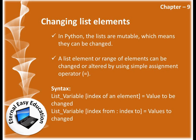Changing list elements in Python: lists are mutable, which means they can be changed. A list element or range of elements can be changed - that means a single element or set of elements can be changed or altered by using the simple assignment operator equal. The syntax is: list_variable[index_value] = new_value.